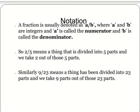Notation. A fraction is usually denoted as a upon b, or a by b, where a and b are integers, and a is called the numerator and b is called the denominator. So 2 by 5 means a thing that is divided into 5 parts, and we take 2 out of those 5 parts. Similarly, 9 by 23 means a thing has been divided into 23 parts and we take 9 parts out of those 23 parts.